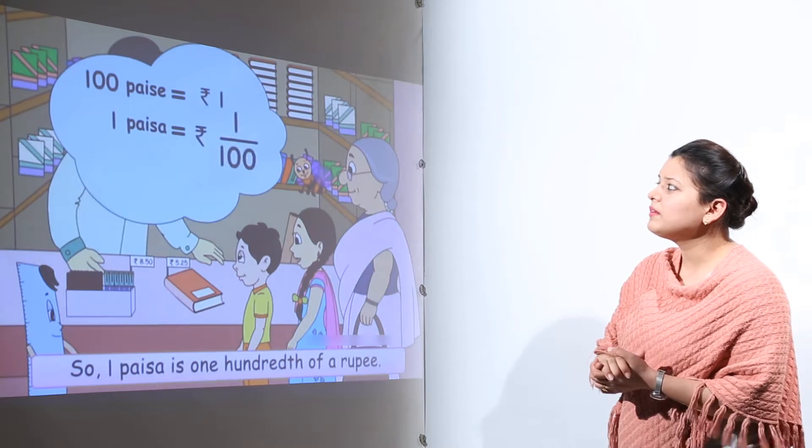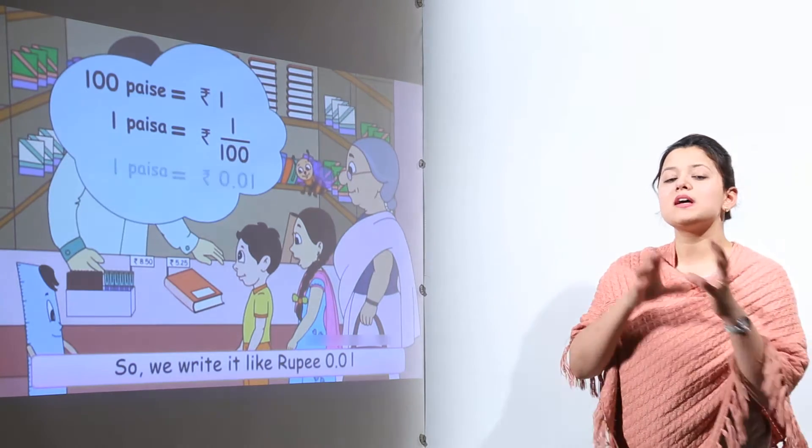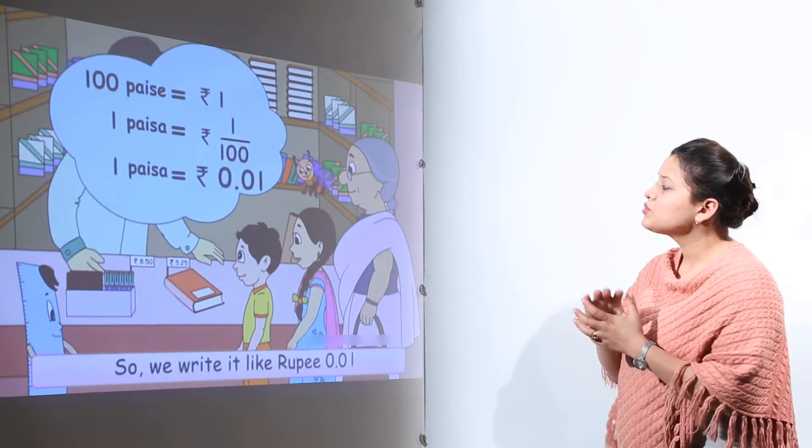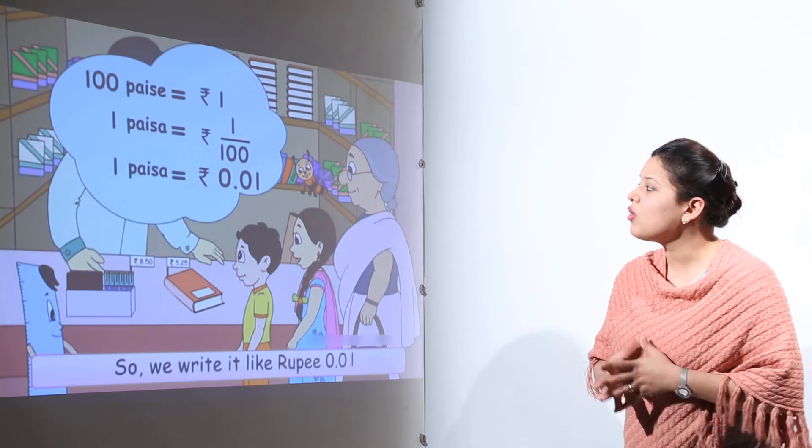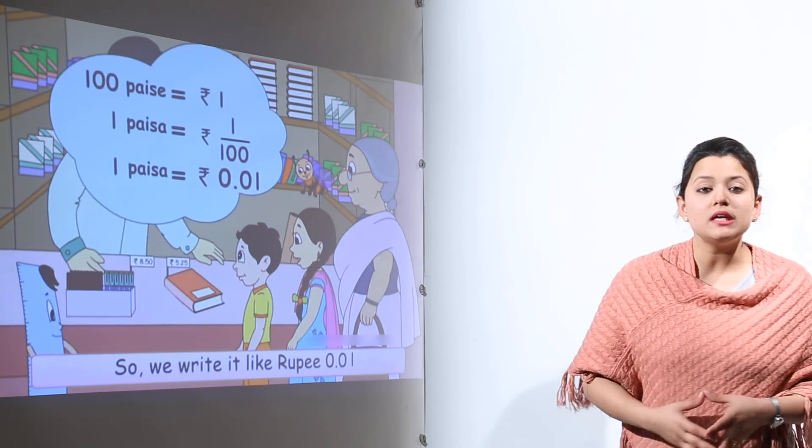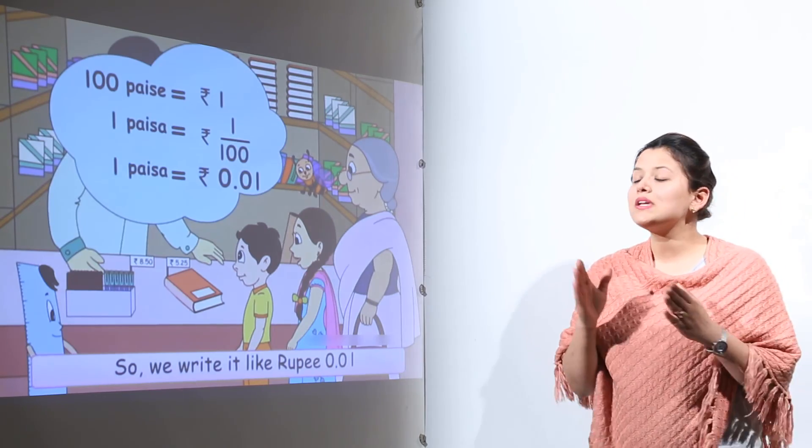So what about the 100 paisa? Actually 100 paisa makes up 1 rupee. So 1 paisa is rupees 1 by 100 or we can say that 1 paisa will be equal to rupees 0.01.